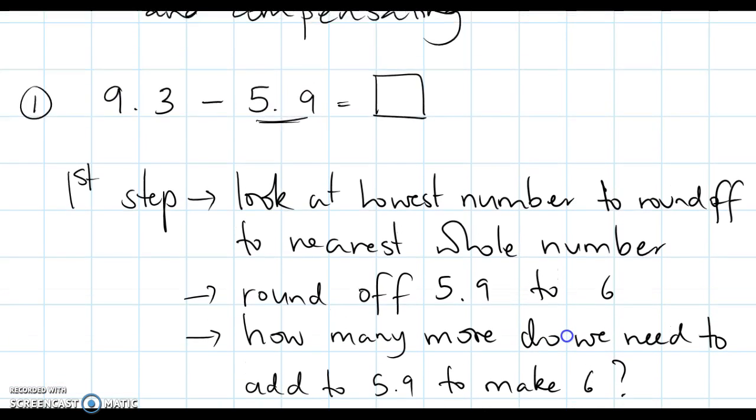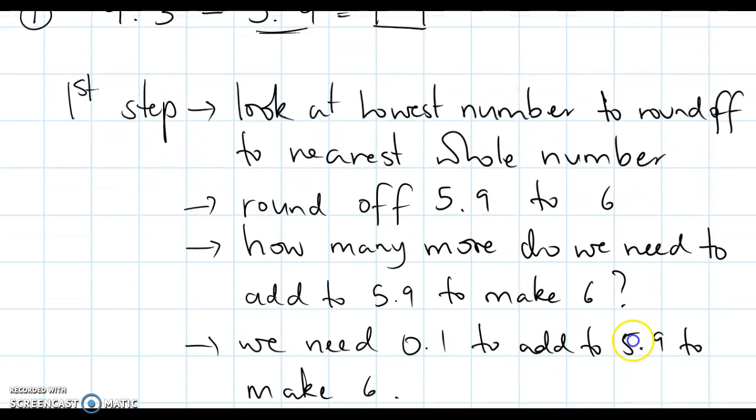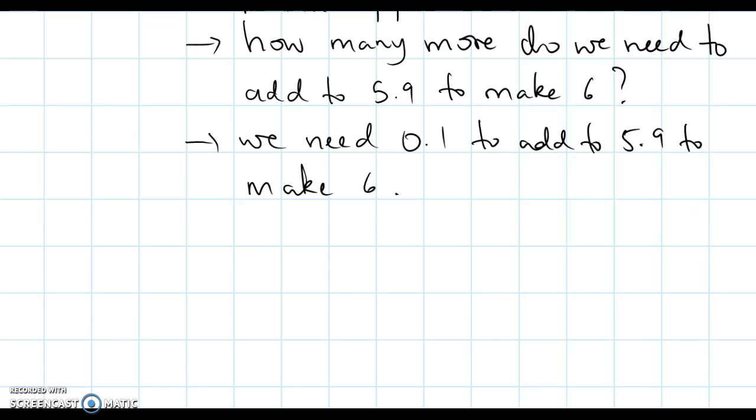Okay, so let's go back to our problem. 9.3 take away 5.9. So now our problem is going to look like this. So 9.3 take away 5.9 equals 9.3 take away 6. Because we're rounding it off to the nearest whole number. Then, because we have subtracted too much, we need to compensate it. 0.1, compensate, you return it. You give it back.